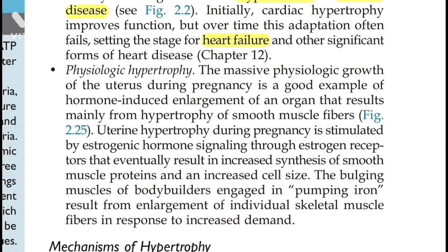Next comes physiological hypertrophy. The massive physiologic growth of the uterus during pregnancy is a good example of hormone-induced enlargement of organs, resulting mainly from hypertrophy of smooth muscle fibers. The stimulus here is hormone-induced enlargement. Since we know the uterus has smooth muscle cells, we don't need to separately mark and remember the 'hypertrophy of smooth muscle fibers' part.